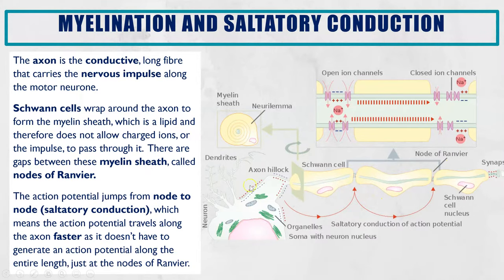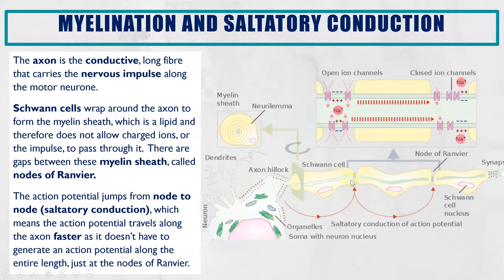The action potential has to jump between the exposed parts of the axon — the nodes of Ranvier — because that is the only place where ions can move in and out, which is how action potentials are generated. This speeds up movement because you only have to generate an action potential in limited spaces — it jumps from one node to the next. In contrast, if the axon was unmyelinated, every single part would have to generate an action potential, taking much longer to reach the end.